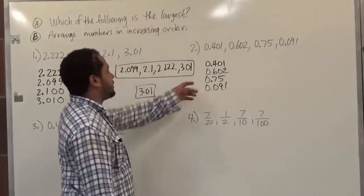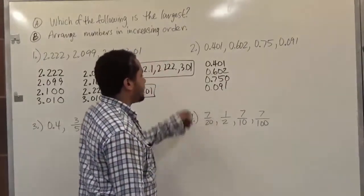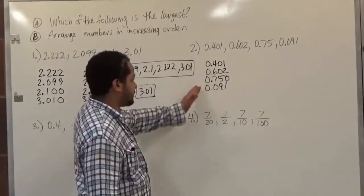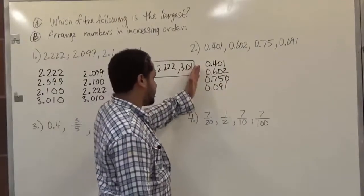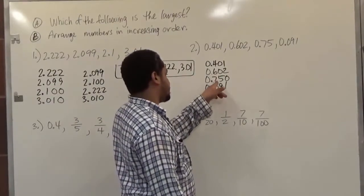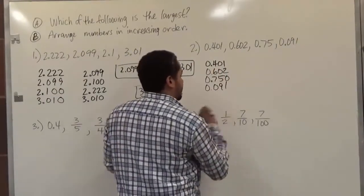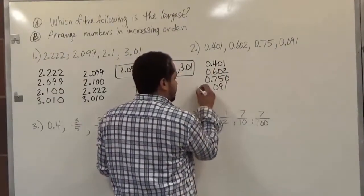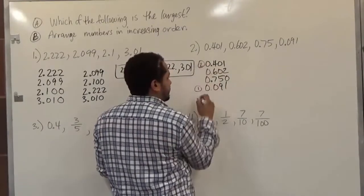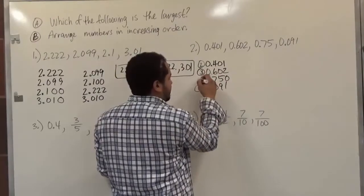The only number that needs a placeholder is 0.75 — we add the zero there. We start comparing numbers from left to right. They're all zero in the first position, so they're all equal there. For the second position we have a zero, a seven, a six, and a four. Placing these in order: zero is first, four is second, six is third, and seven is fourth.